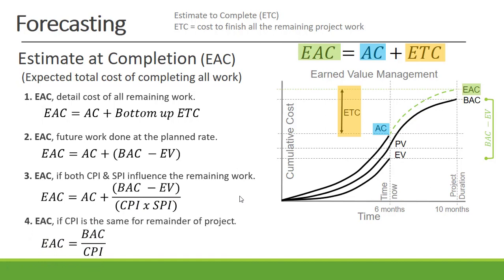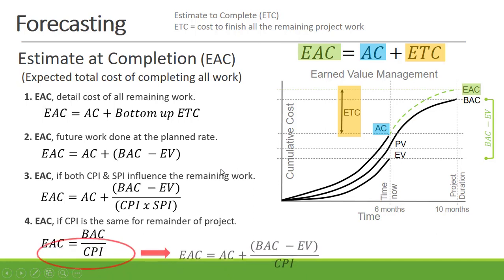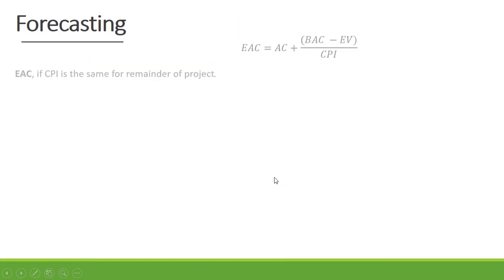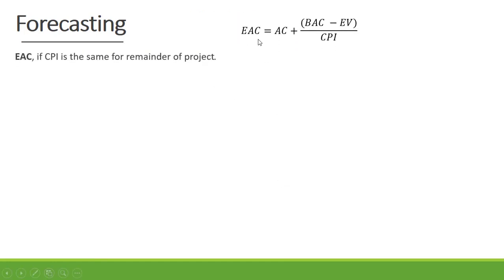And lastly, if the CPI is the same for the remainder of the project, the formula normally used is Budget at Completion divided by CPI. But where does this formula come from? It is actually simplified from: Actual Cost plus Budget at Completion minus Earned Value, all divided by CPI. So let's do the simplification. We start with: EAC = AC + (BAC − EV) / CPI.